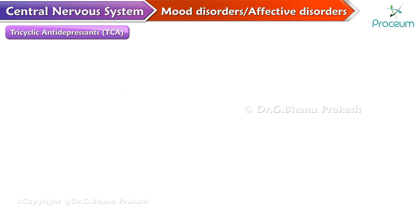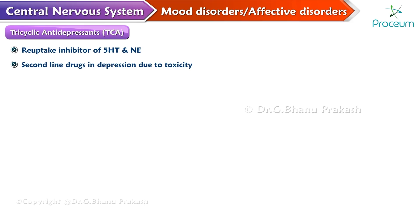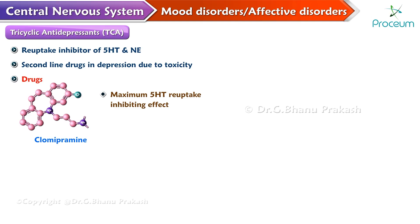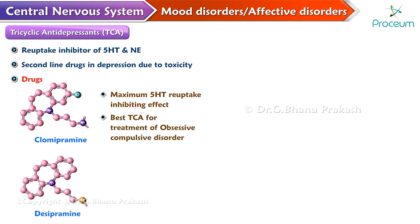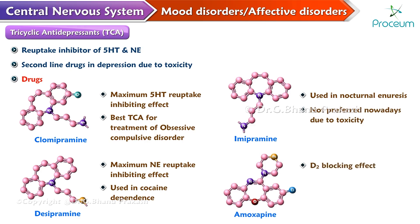Tricyclic antidepressant medications. The TCAs are reuptake inhibitors of serotonin and norepinephrine, and are currently the second line of drugs in depression due to the side effect profile of this class. Clomipramine has maximum serotonin reuptake inhibiting effect and is the best TCA for treatment of obsessive-compulsive disorder. Desipramine has maximum norepinephrine reuptake inhibiting effect and is used in cocaine dependence. Imipramine can be used in nocturnal enuresis but is not preferred nowadays due to its toxicity. Amoxapine has D2 blocking effect as well, and hence is used in psychotic depression. Due to its D2 blocking effect it can cause extrapyramidal side effects.